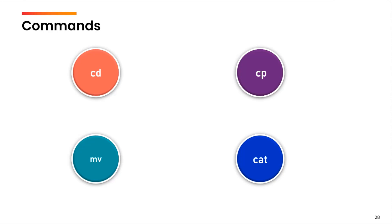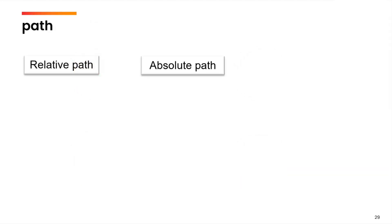Before we start with these commands, let us first talk about the concept of path. There are two ways in which we can specify the path. In many commands we have learned so far, we have specified the file name. Most of the times we have considered that the file is in our current working directory. But what if the file is in a different directory? Then we can use two ways: either the relative method or the absolute method.